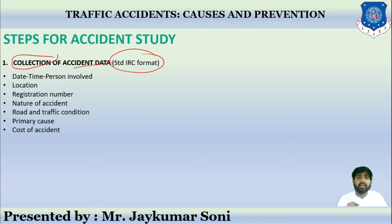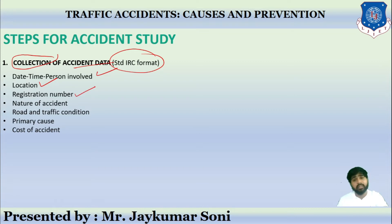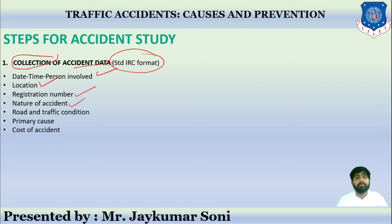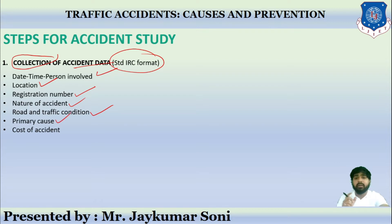When performing accident data collection, we need to collect the date, time, and persons involved; information related to the location where the accident took place; and registration numbers of the vehicles involved. We also collect the nature of the accident, the reason it occurred, the type of road condition, and the type of traffic condition on that particular road.